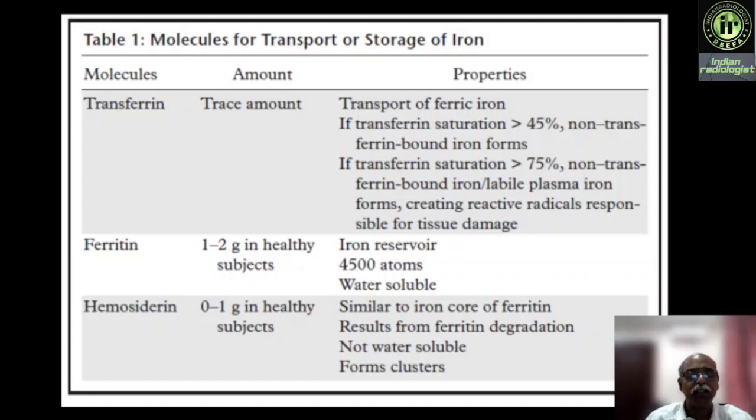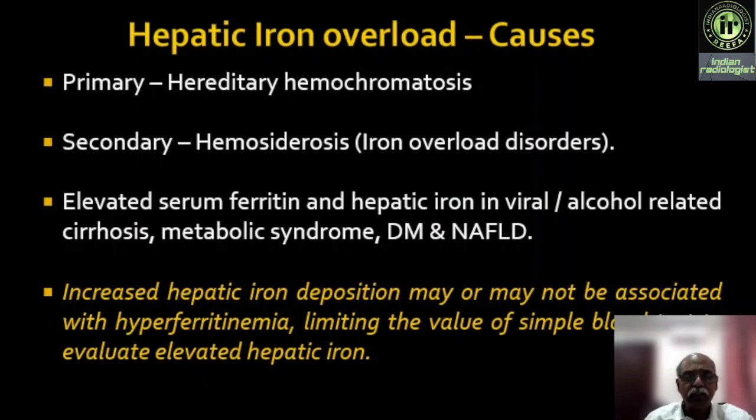Hepatic iron overload causes are primary and secondary. Primary is the genetic disorder known as hereditary hemochromatosis. Secondary is hemosiderosis due to iron overload status — sickle cell disease, thalassemia, aplastic anemia — repeated destruction of RBCs leading to iron overload status.